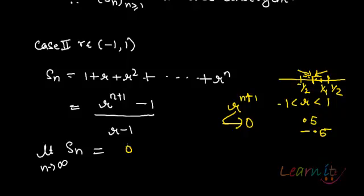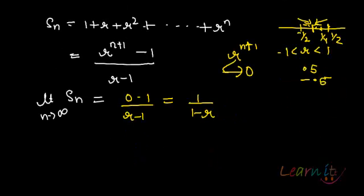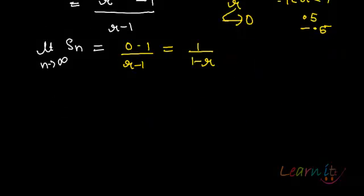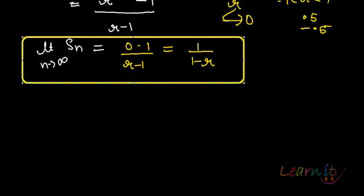So this converges to 0. What do we have then? Zero minus 1, divided by r minus 1, which is basically 1 upon 1 minus r. So when r lies between minus 1 and 1, the limit exists and equals 1 upon 1 minus r.